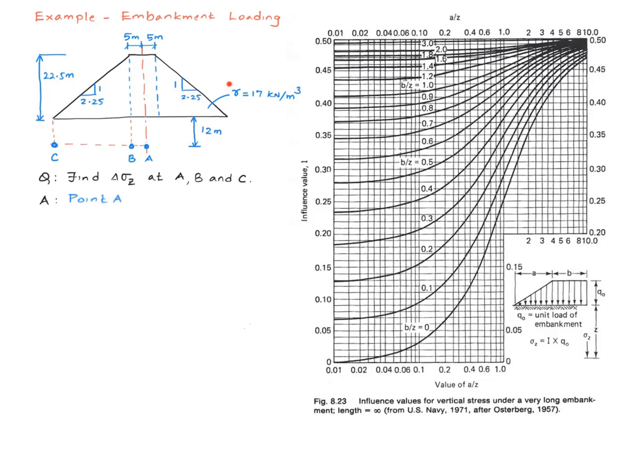Obviously, this embankment does not look like this one right here for which the chart applies. So this is what you do. You cut the embankment right along the center line, separate that into two parts, find the contribution of the vertical stress change due to each part, and then sum it up to find the total vertical stress change at point A. So we are invoking the principle of superposition here.